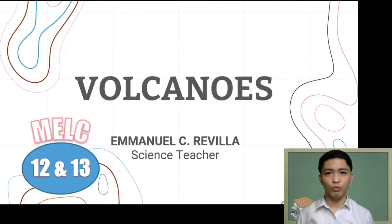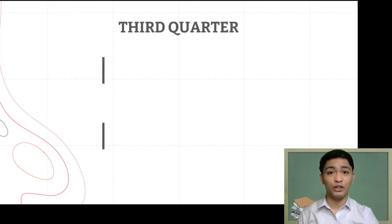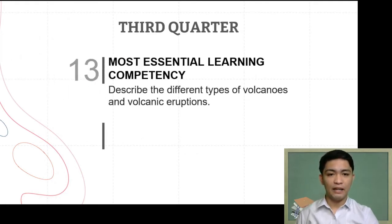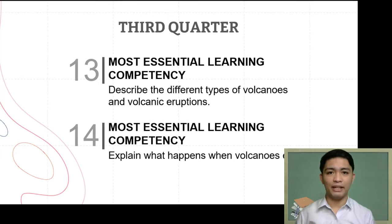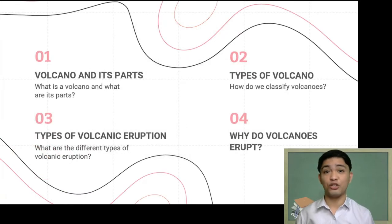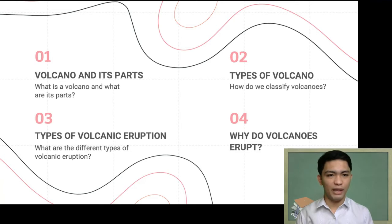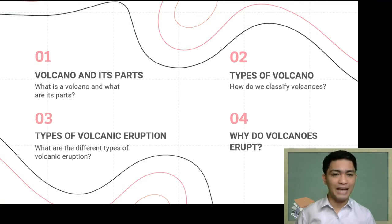In this video and the next one we will be discussing everything that has to do with volcanoes. This video is based on the 13th and 14th most essential learning competencies: describe the different types of volcanoes and volcanic eruptions, and explain what happens when volcanoes erupt. We will achieve this by going through four sections of our discussion.